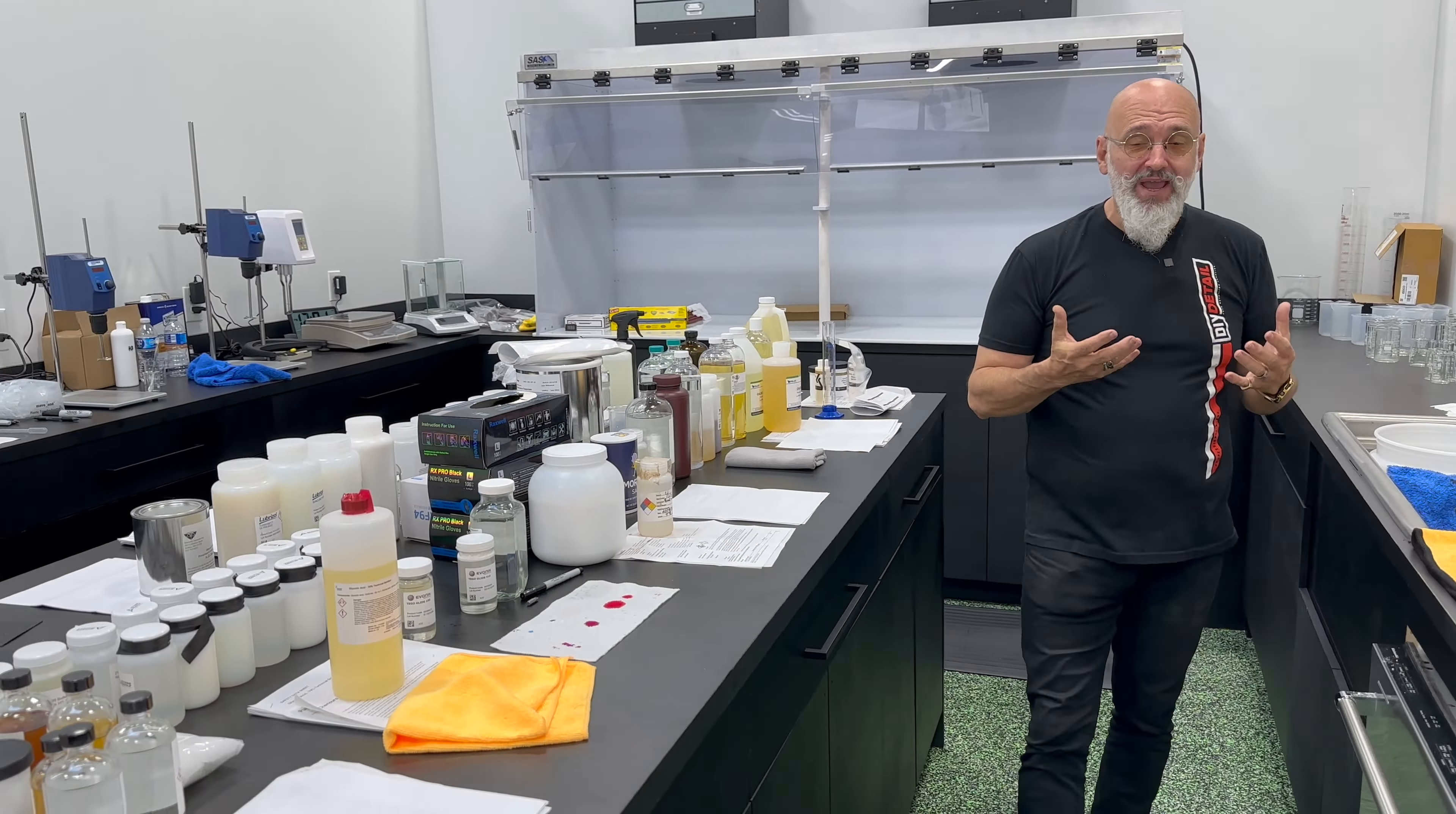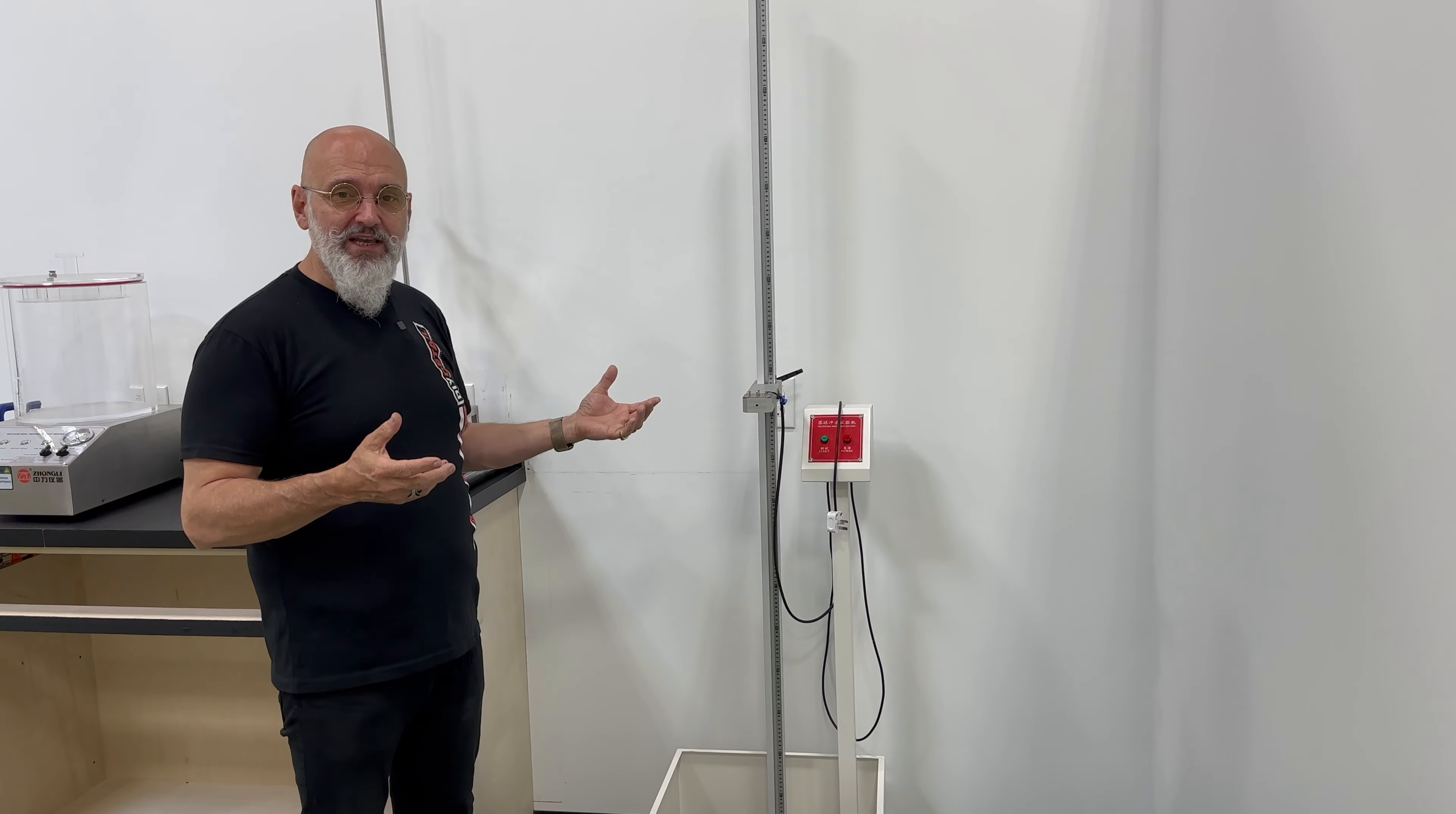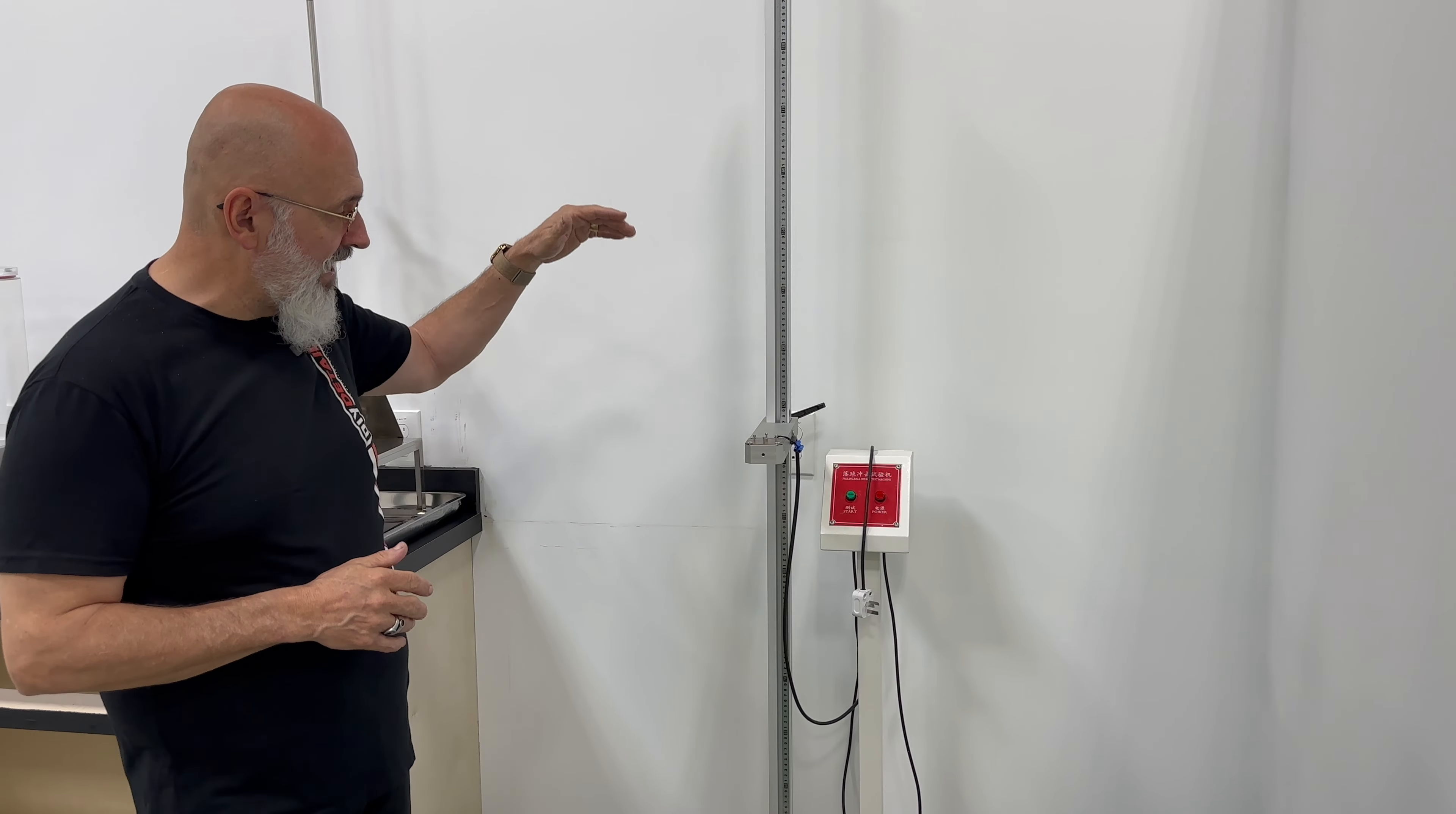This one here is an interesting one. This is a drop tester for glass. So you have a window. You want to see if the coating is actually changing something on the window. This is how we test it. So it drops from a certain height, certain weight, et cetera. We're not using that one yet.